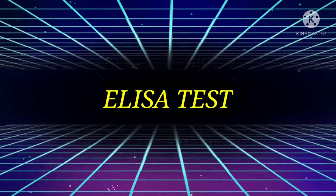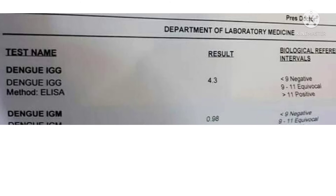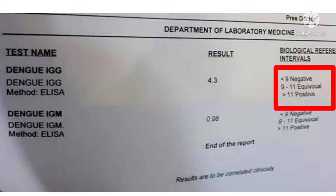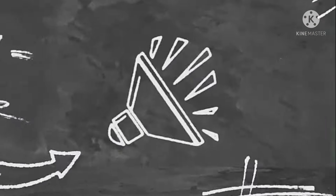However, if the test is done by ELISA method, the reports will be different. Here we can see the test report done by ELISA method — there is no positive or negative, but there will be some numbers. If it is less than 9, it is negative; 9 to 11 is equivocal; and greater than 11 is positive. So if the number is greater than 11, the person is affected with dengue. If the value is between 9 and 11, they should get their test done again after one week.